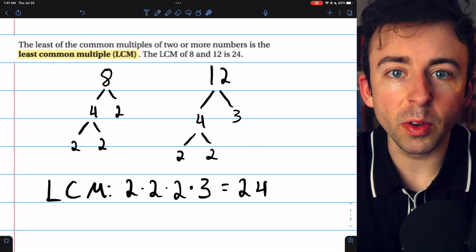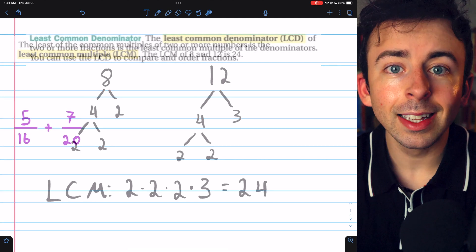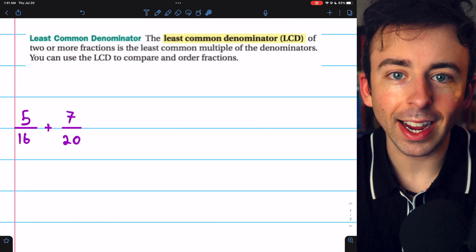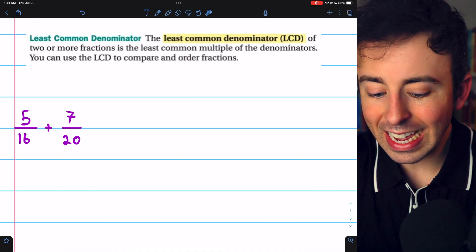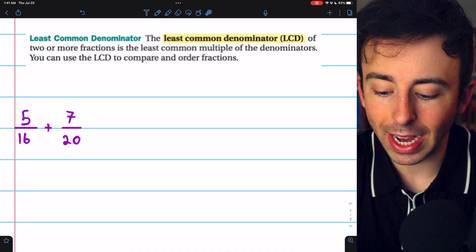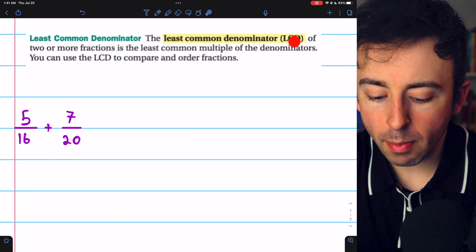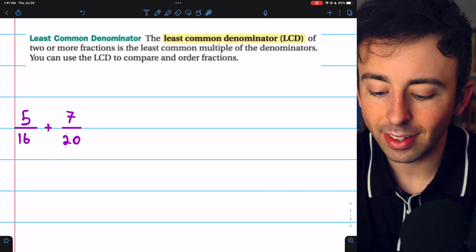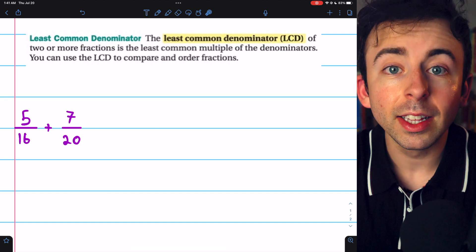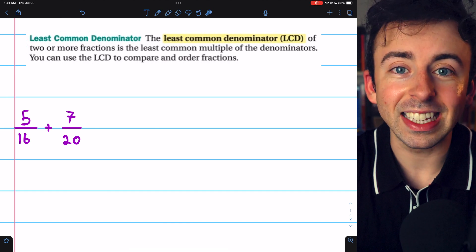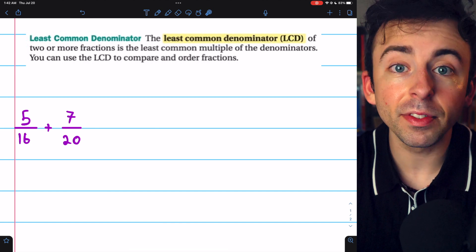Don't worry if that was a little confusing. We'll do another example. Let's slightly change the context, though. One of the big uses of least common multiples is least common denominators. The least common denominator of two or more fractions is the least common multiple of the denominators.